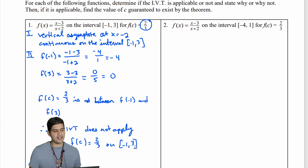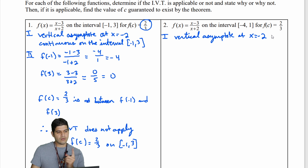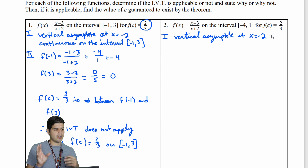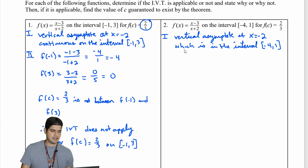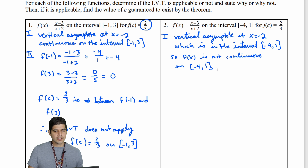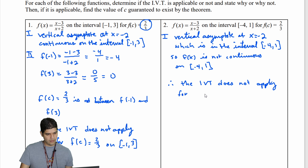Problem 2 uses the same function and the same target value of 2/3, but now we change the interval. Starting with part 1, we know there's a vertical asymptote at x equal to negative 2. Negative 2 is in between negative 4 and 1, which means it is in the interval negative 4 to 1. So the function is not continuous on negative 4 to 1, and we don't even need to check part 2. Therefore the intermediate value theorem does not apply for f of c on negative 4 to 1.